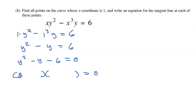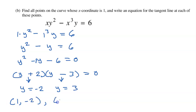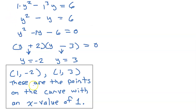So y squared only factors as y times y. 6 can factor a couple of ways, but 2 times 3 is the one we need — we need the middle term to be negative 1y, which means a positive 2 and a negative 3. Using the zero product property, we set each factor equal to 0 and solve. That gives us y equals negative 2 and y equals positive 3. Combining these y values with the x-coordinate of 1, we end up with the points (1, -2) and (1, 3). These are the points on the curve with an x value of 1.